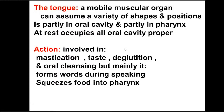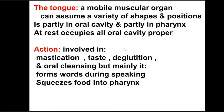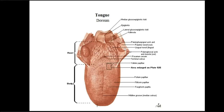We will continue now. We have studied the roof of the oral cavity and the floor. Now we pass to the contents of the oral cavity. The oral cavity contains the tongue, the sublingual salivary gland, and a portion of the submandibular salivary glands. We will start with the tongue. The tongue is a muscular, mobile organ covered with mucous membrane, formed of an aponeurosis covered with muscles attached to it, lying over the floor of the oral cavity.